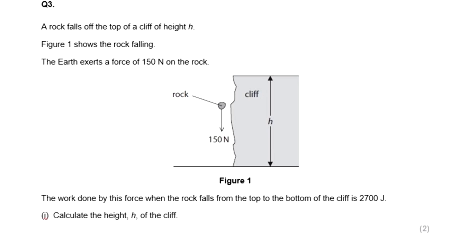In this question we have a rock that has a weight of 150 newtons. That's what the question means when it says the earth exerts a force of 150 newtons on it. That's its weight. As it falls to the ground, 2,700 joules of work is done on it. What is the height of the cliff? Pause now.